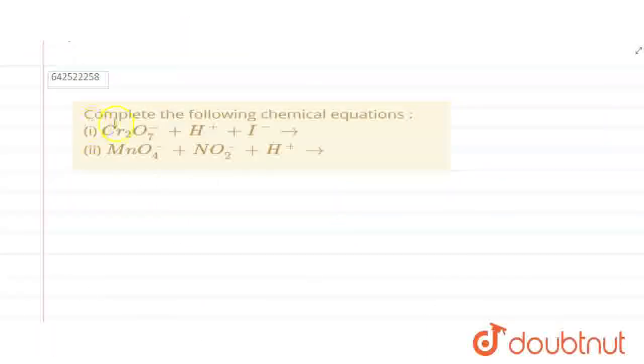Hello everyone. The question says that, complete the following chemical reactions. First one is Cr2O7 2- reacts with H+ and with I-. So these are redox reactions, so we need to balance them.